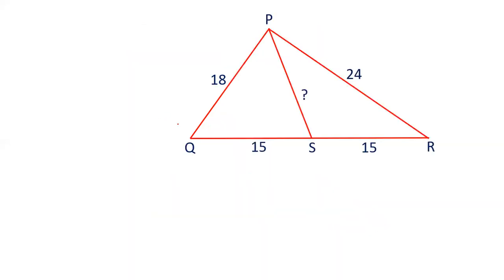First of all, let me tell you one thing. If there is a triangle and median is given, that means it is the midpoint. It is given also that QS is 15, RS is 15, so definitely S is the midpoint. To find the length of median, there is a formula: the median on the side, leave that side and take the other two sides.